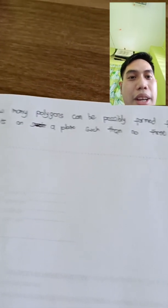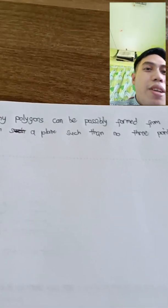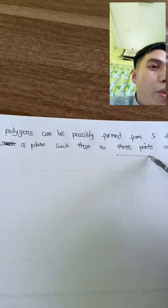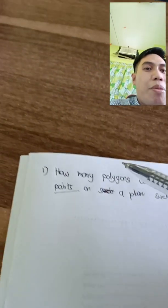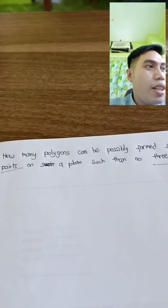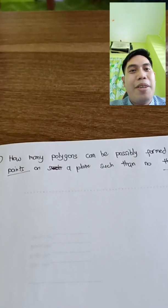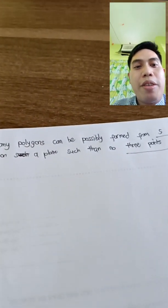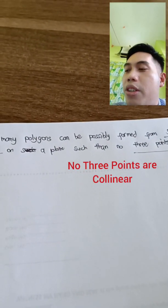Points on a plane such that no three points are collinear. So my technique in solving problems is to identify the main points. Some of the main points here is no three points are collinear and five distinct points. So how many polygons? When we see polygons, we know that it's an enclosed shape with sides. So how many polygons will form from five distinct points where three points are not collinear?